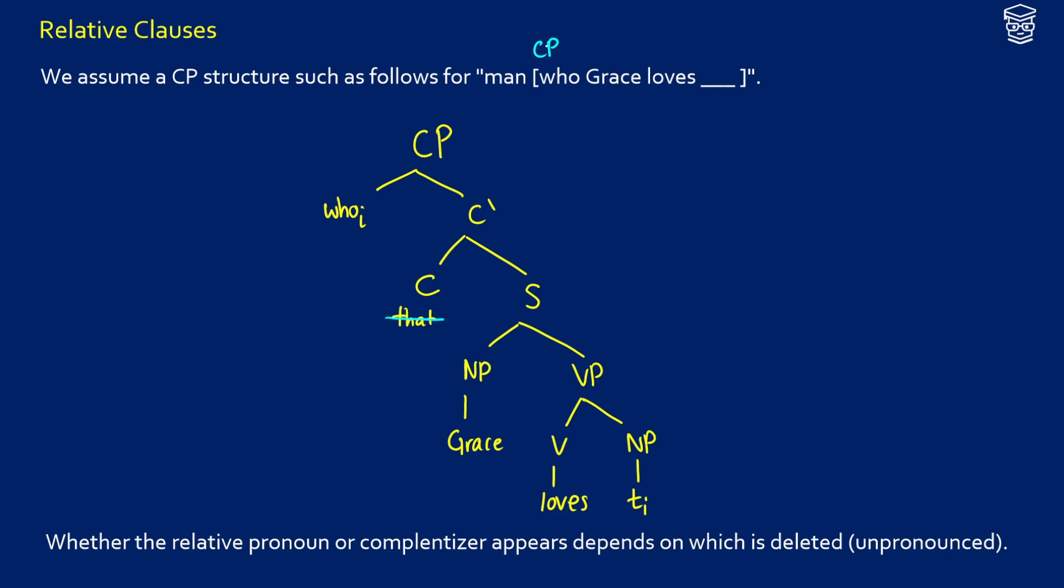We're going to have a CP with "who," our relative pronoun at the top, and it's coming from the original position that was being moved or deleted for "man." So this is "a man who Grace loves." Man is coming out of "Grace loves the man" or "a man," and it's going up to the front. So "who" is basically what the movement pattern is doing, and it's being linked with "man."